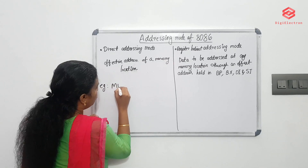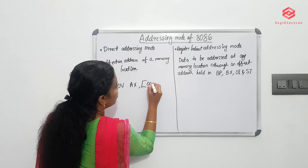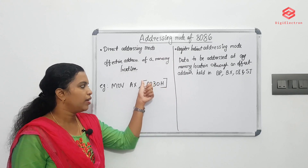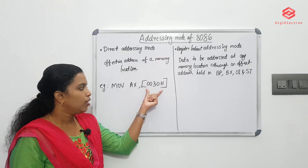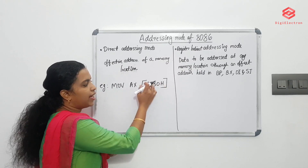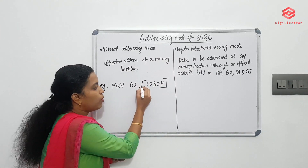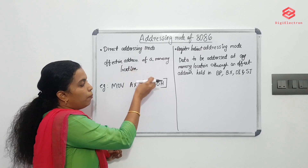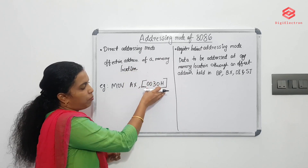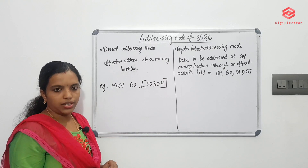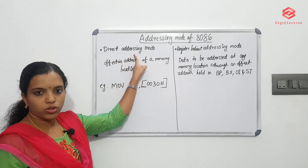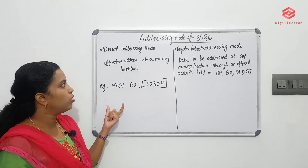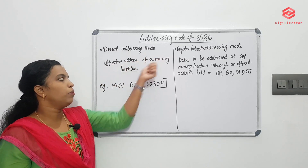Here is an example: MOV AX, [0030H]. The square bracket indicates a memory location address. The address 0030H is used directly as the source operand — that is why it is called direct addressing mode. The effective address of the memory location is directly given in the instruction.